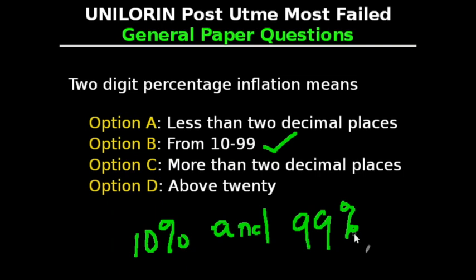As you may already know, a double-digit number is between 10 and 99. So Option B is the correct answer.